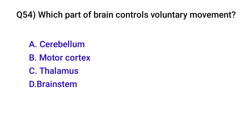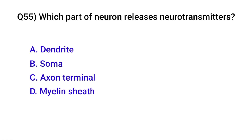Question number fifty-four: Which part of the brain controls voluntary movement? Correct option is B: Motor cortex. Question number fifty-five: Which part of the neuron releases neurotransmitters? Correct option is C: Axon terminal.